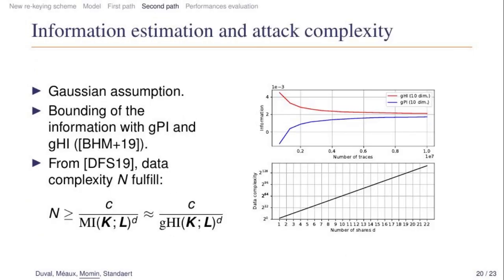Based on these points of interest, we tried to approximate the amount of information we were able to obtain from our measurements. For this we made the Gaussian assumption for the leakage, which means that the leakage value when a specific data is processed follows a Gaussian distribution. Under this assumption, our analysis relies on two bounds for the information we can recover from the leakage, which are the Gaussian perceived information (gPI) for the lower bound and the Gaussian hypothetical information (gHI) for the higher bound. We are then able to estimate the amount of measurements required to perform a side channel attack based on the information bounds we obtained. Our results show that using 10 shares, 2^64 measurements are required to recover 32 bits of the key.